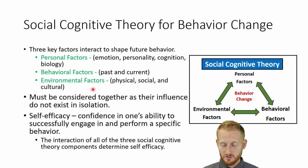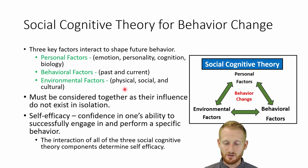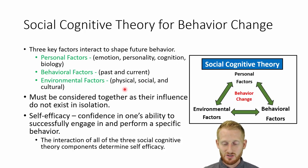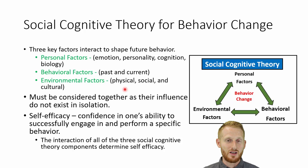The third component of the social cognitive theory is environmental factors — the physical, social, and cultural environment around your clients. By physical environment, I mean: do they live in a city? Do they have good public transportation, or do they have to drive or walk to the gym? Those aspects of their lives can either make it easier to exercise or create barriers that you'll have to work around.